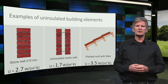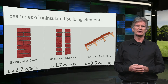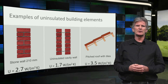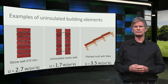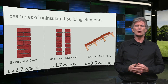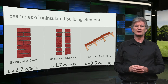Let's have a look at some examples of U-values for uninsulated building elements. An uninsulated masonry wall has a U-value of 2.7, a wall with an uninsulated air cavity 1.7, and a plywood roof 3.5.